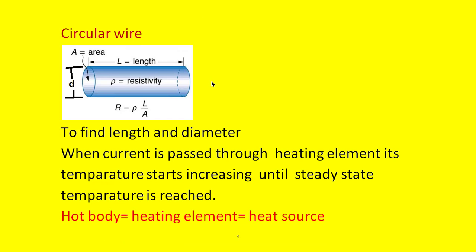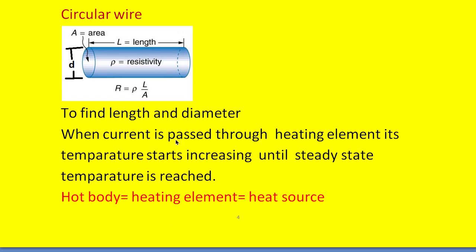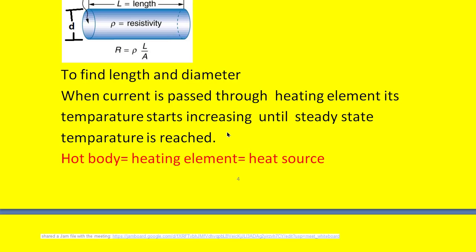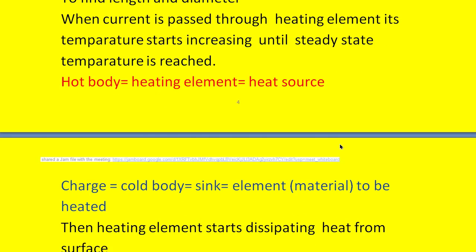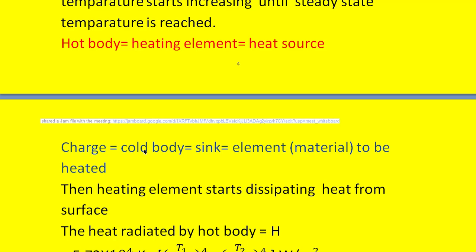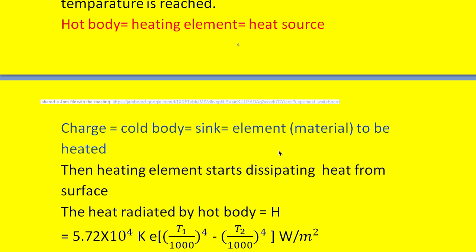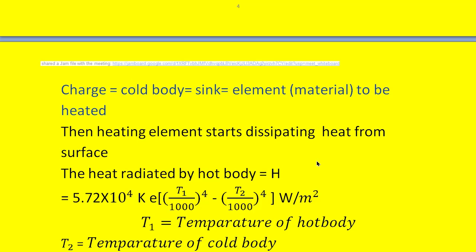To find them, we apply voltage to the wire and pass current through the heating element; its temperature starts increasing until it reaches steady state temperature. Here there are some terms to remember: the hot body is also called the heating element or heat source. There is another term called the charge, which is also called the cold body or sink — this is also called the element to be heated or material to be heated.